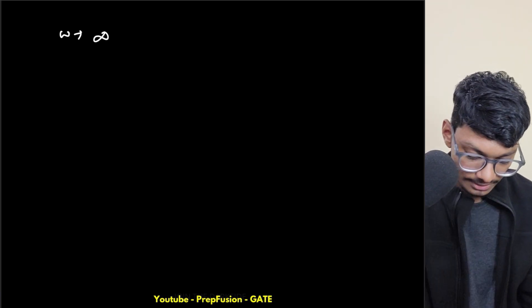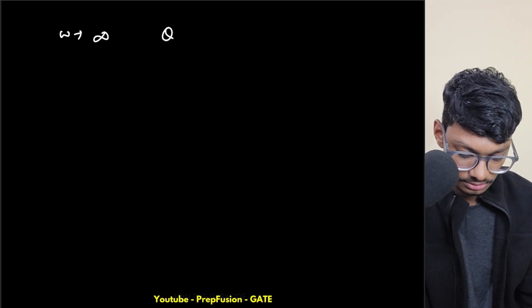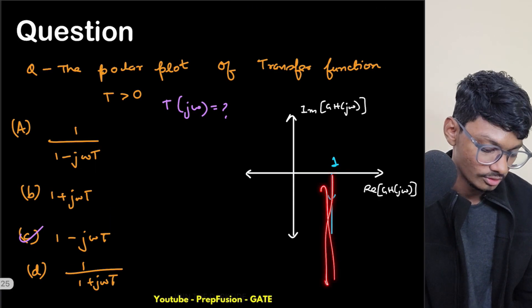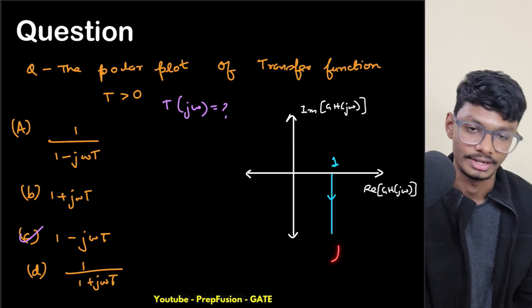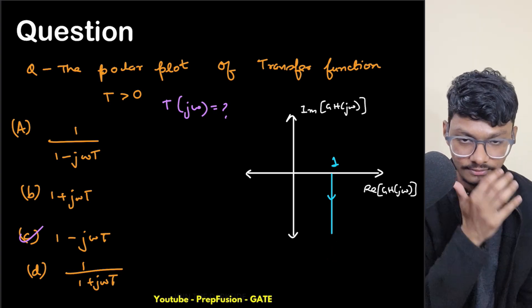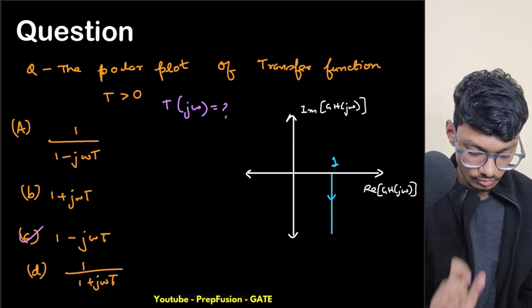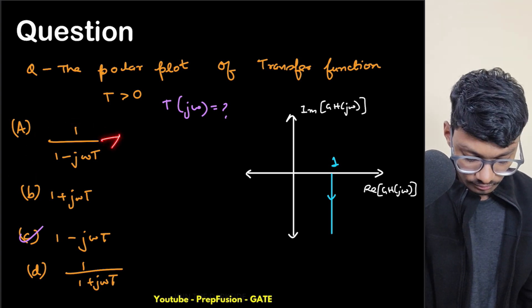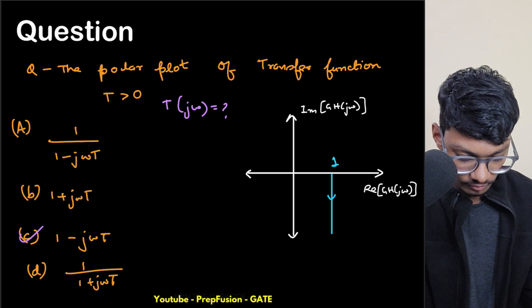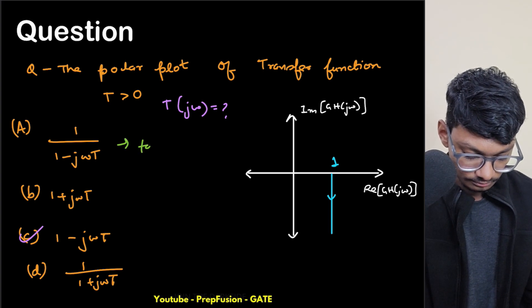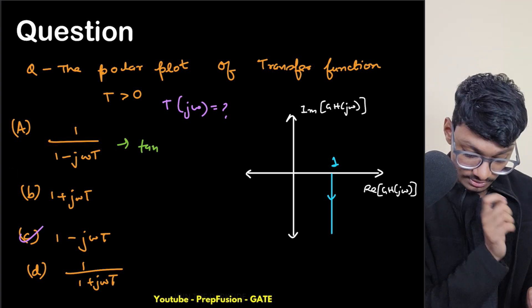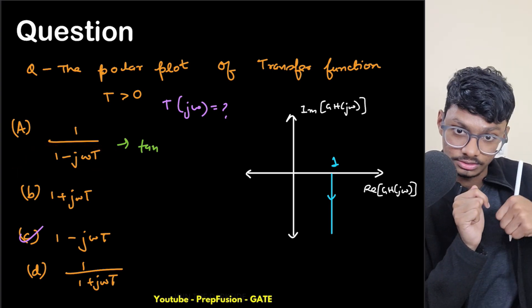If you want to approach it more rigorously: at omega approaching infinity, the angle of G(jω) is exactly minus 90 degrees. So which transfer function provides a minus 90 degree angle at infinity? Let's look at the angle formula for each option.